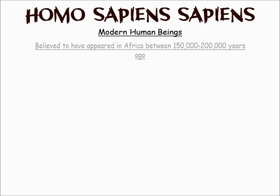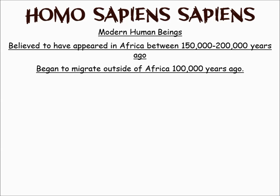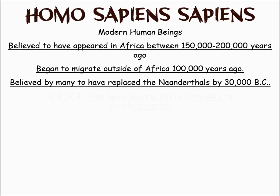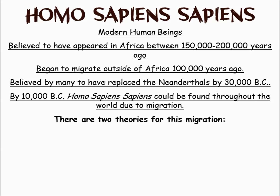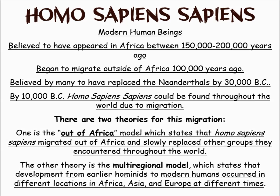Modern humans are thought to have first appeared in Africa around 150,000 to 200,000 years ago, and they began to migrate out of Africa about 100,000 years later. Many scientists believe they replaced Neanderthals either through selective breeding or through conquering and killing them. There are two theories for how people migrated: the out-of-Africa model, which says people became modern humans in Africa and then left; and the multi-regional model, which proposes that populations left as lesser humans and then evolved in different regions.